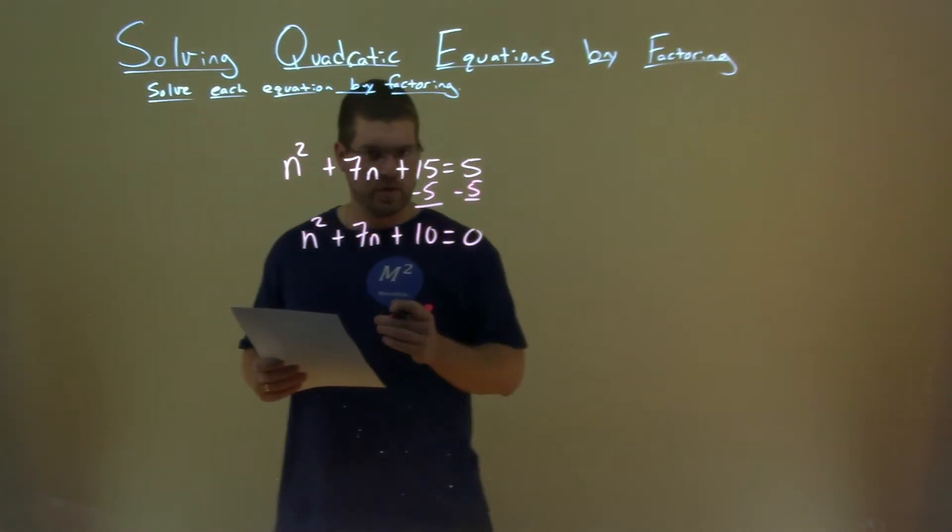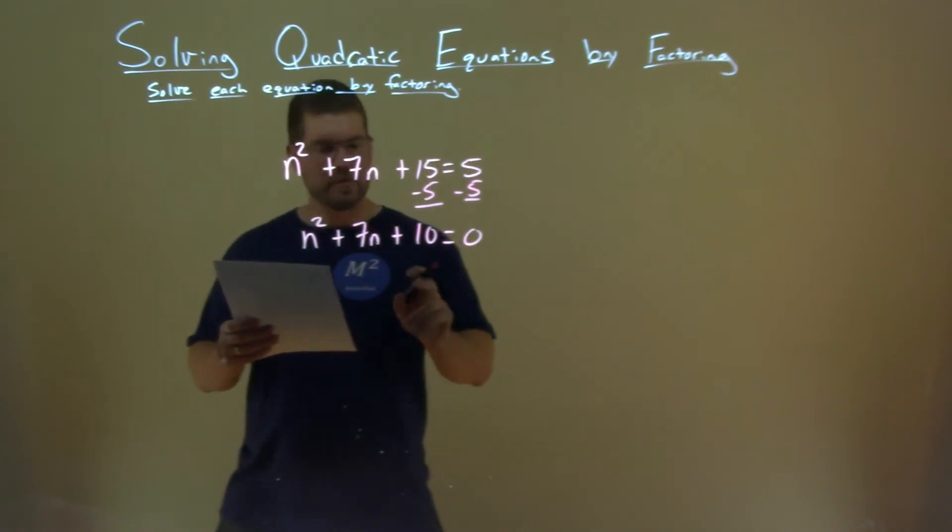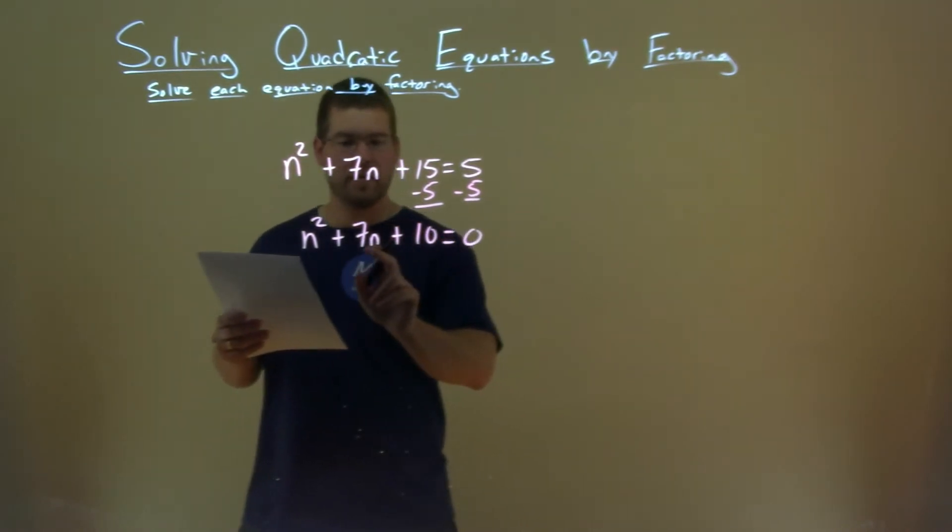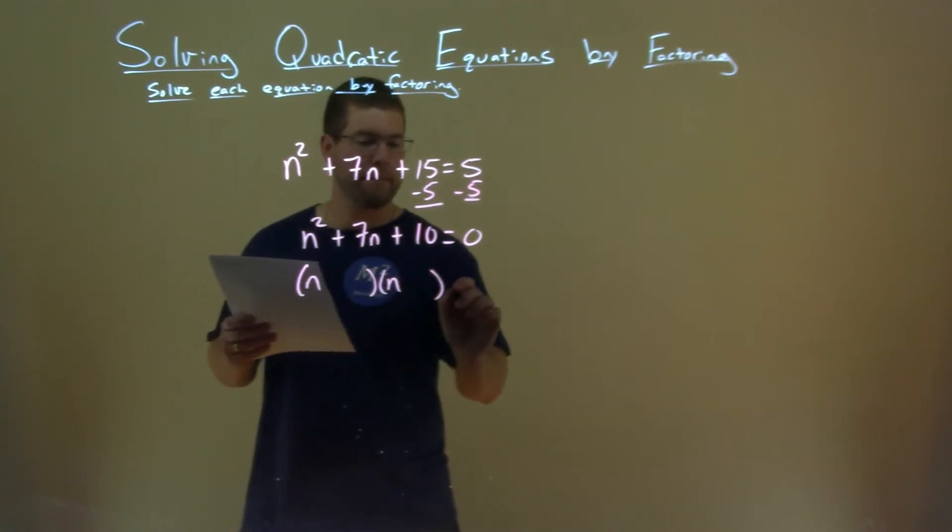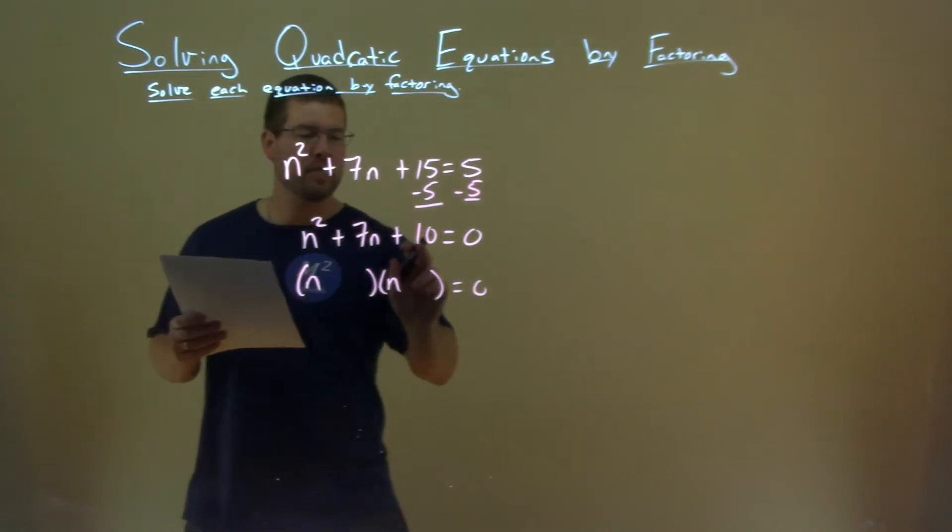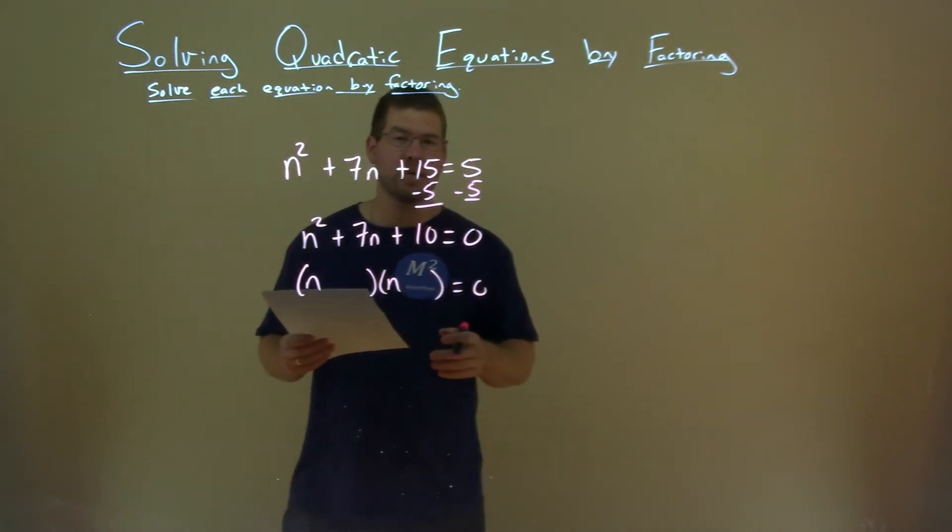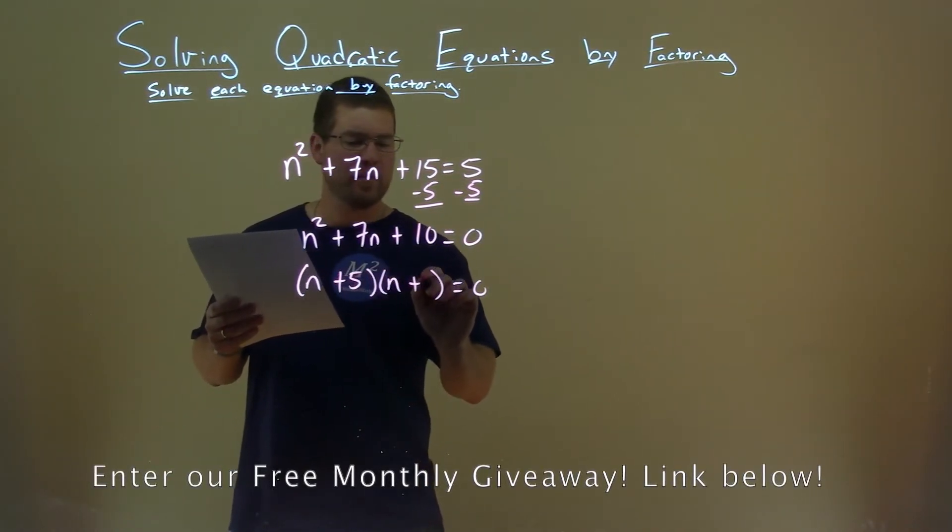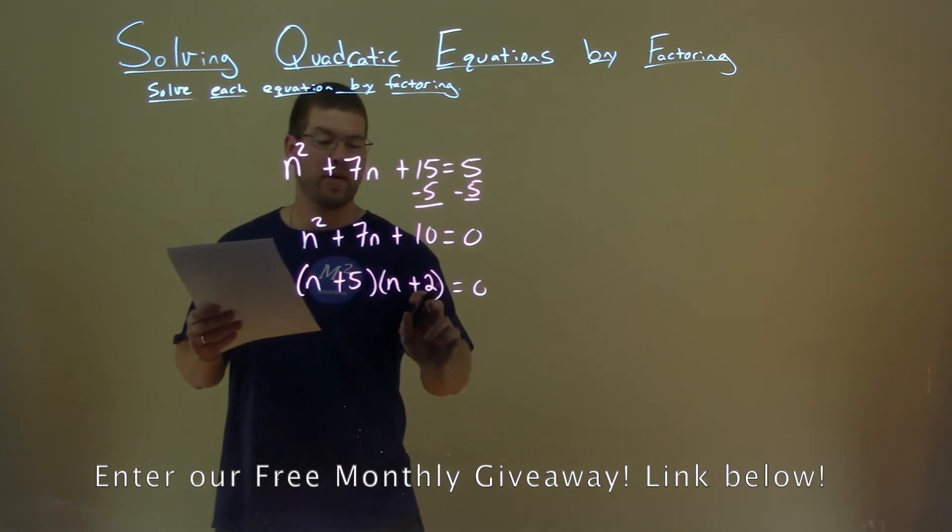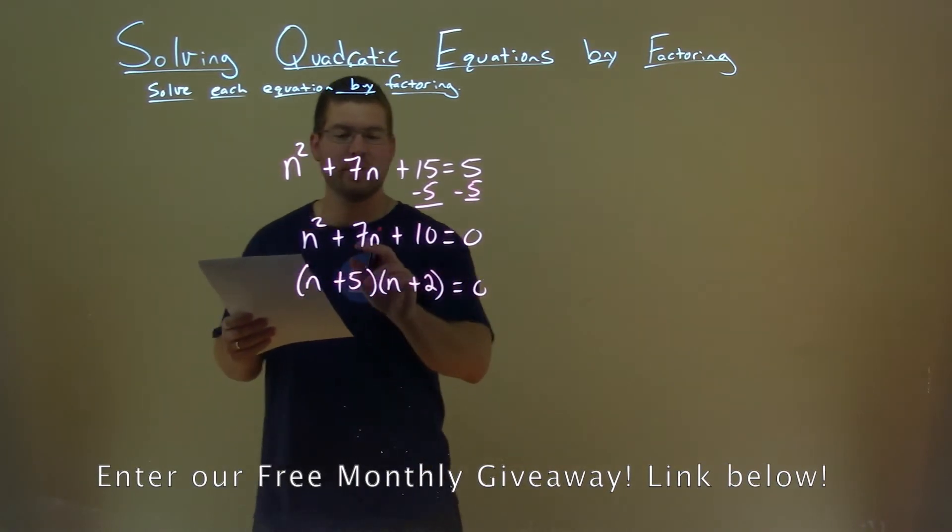Now, we try to factor this. What two numbers multiply to be a positive 10 but add to be 7? We're looking for two numbers that multiply to be 10 and add to be 7. Well, it's 5 and 2, right? n plus 5 and n plus 2. 2 times 5, or 5 times 2 is 10; 5 plus 2 is 7.